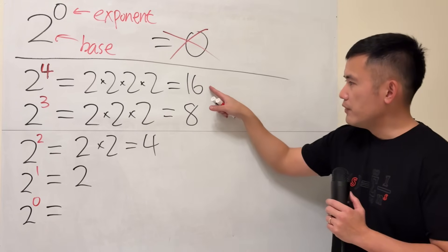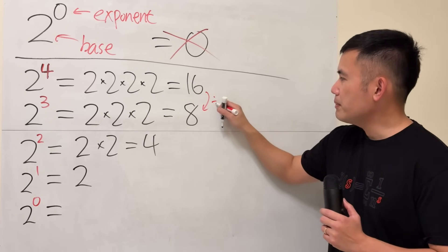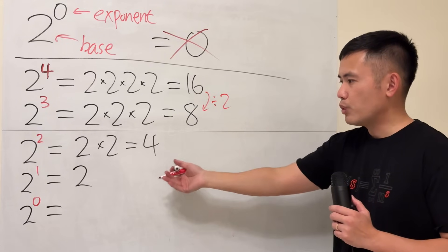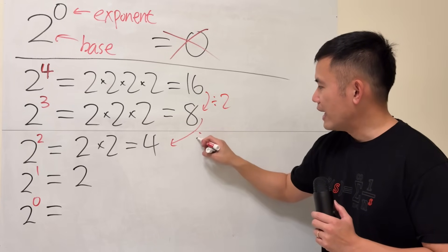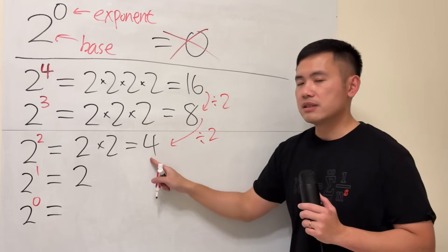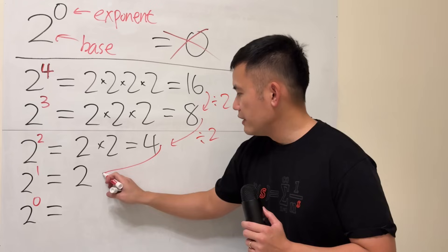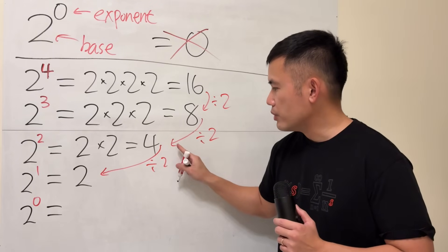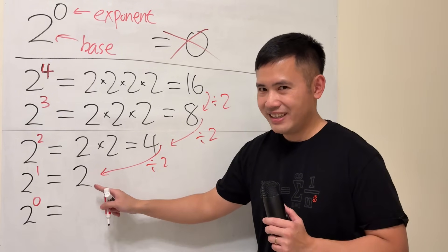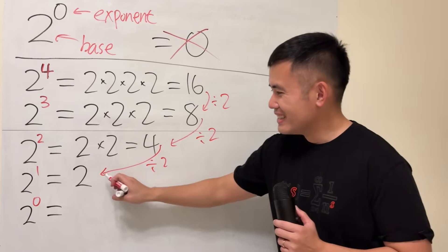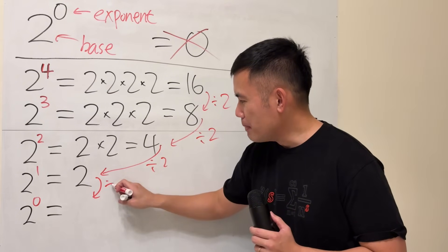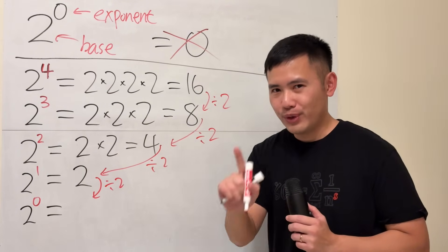So, if you look here from 16 to 8 as dividing by 2, does that work for the rest? Yes, 8 divided by 2 does give us 4. 4 divided by 2 does give us 2. And then, you know it. I know you know it. Take the 2, and then divide it by 2. 2 divided by 2, of course, we get a 1.